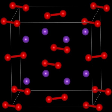Potassium peroxide reacts with water to form potassium hydroxide and oxygen.